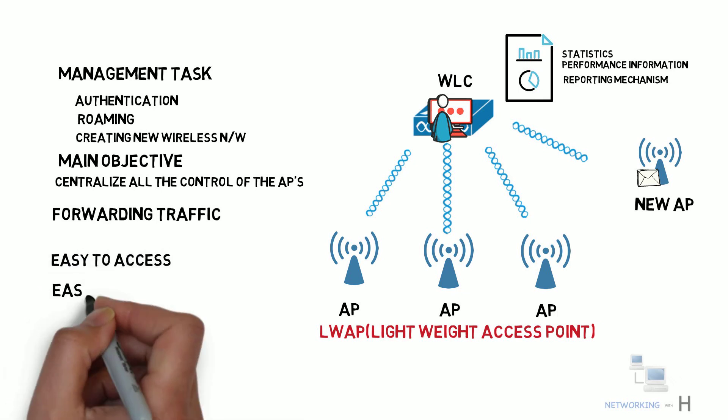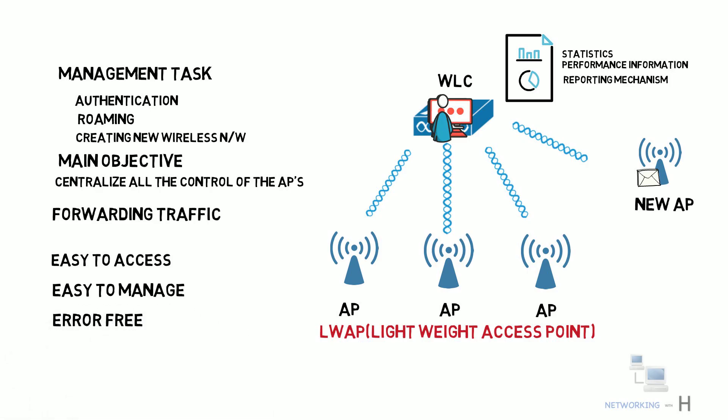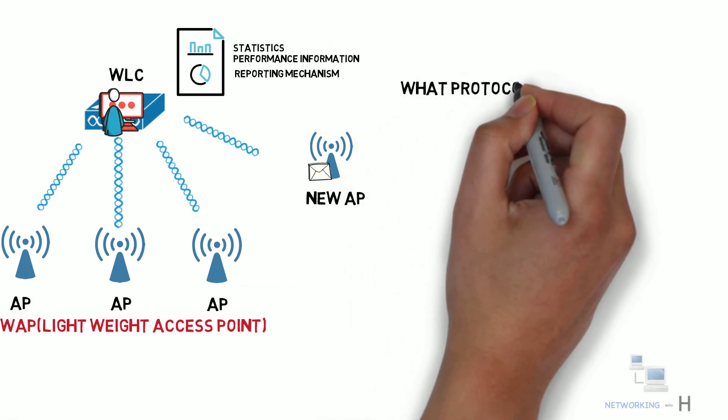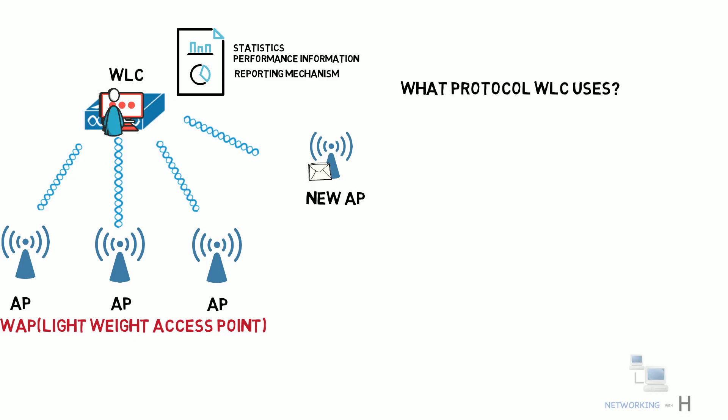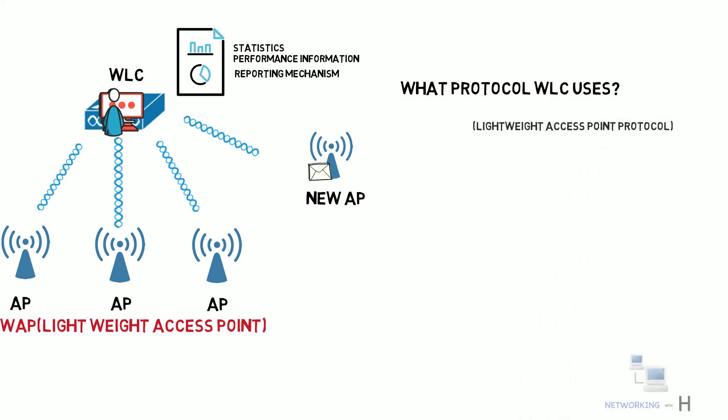So what protocol does a WLC use to manage access points? It uses LWAPP — Lightweight Access Point Protocol — which is used between the WLC and the AP to manage access points in large quantities by the network administrator or network operations center. The WLC is regarded as one of the important elements of a wireless network that is quick and effective.